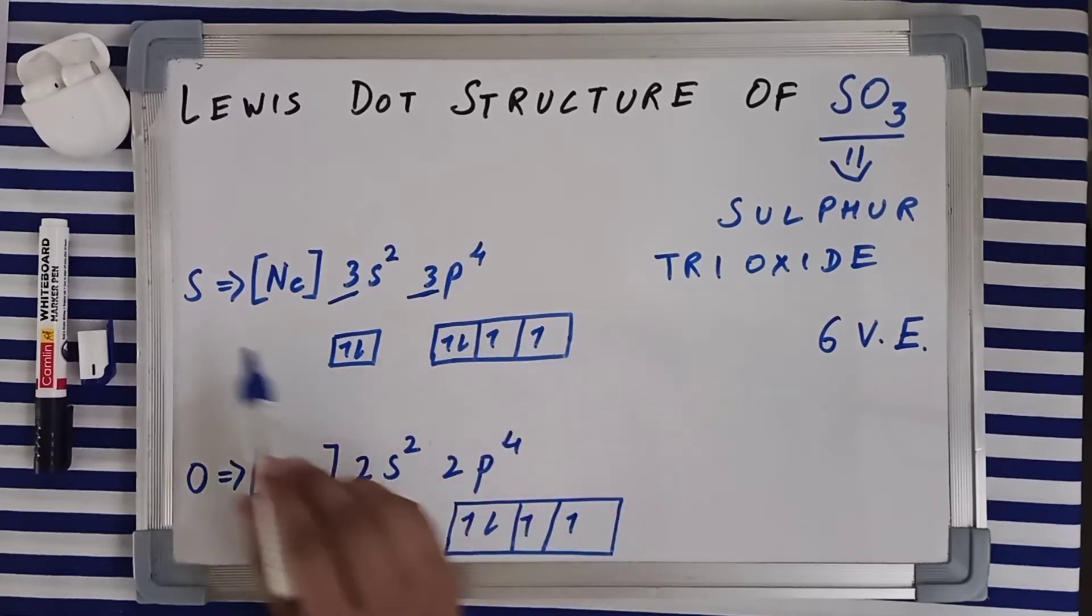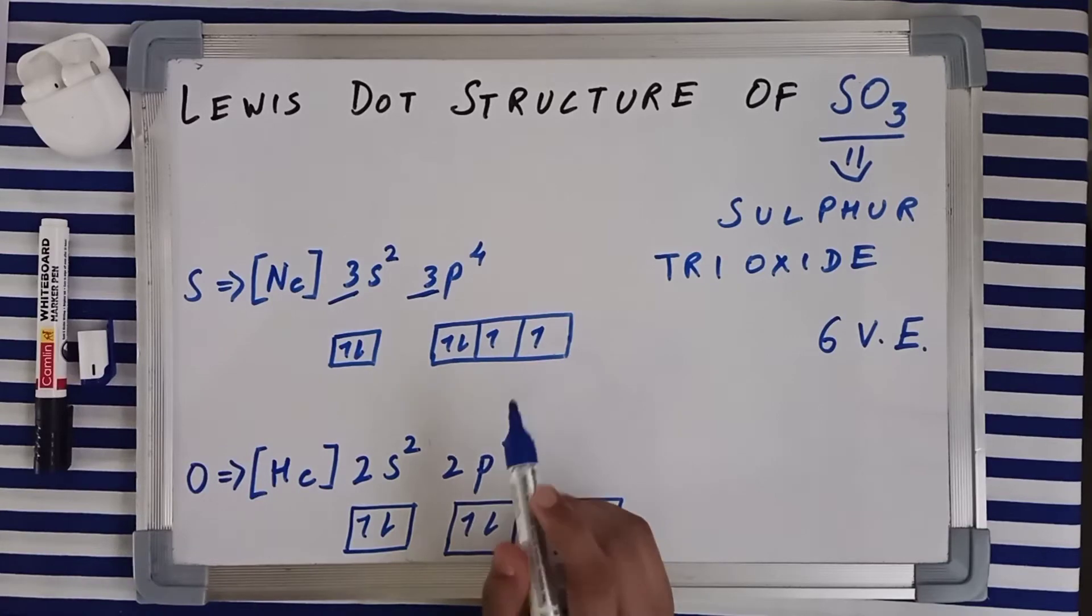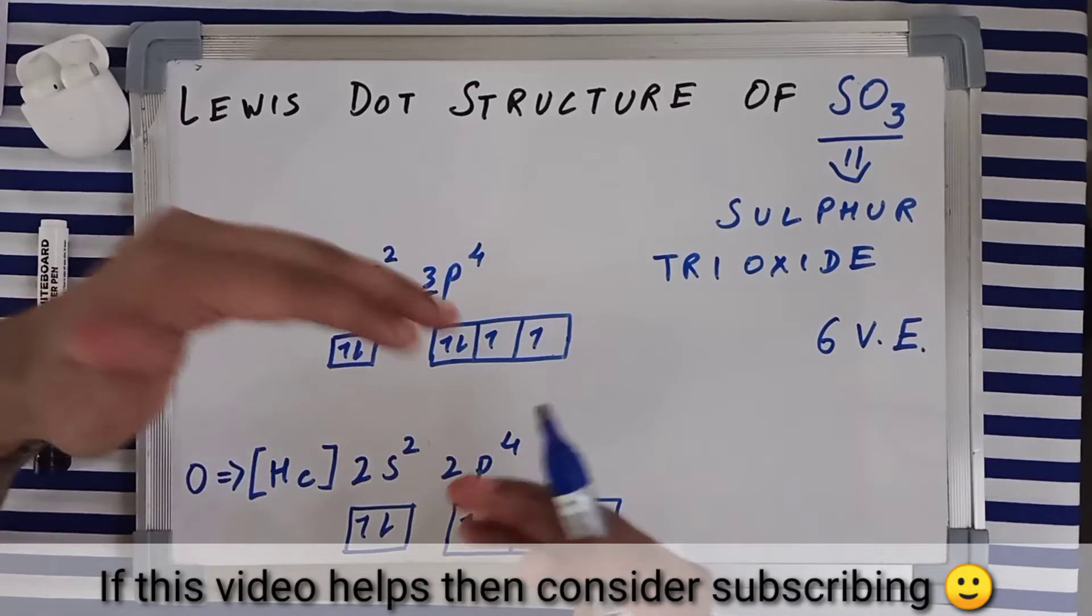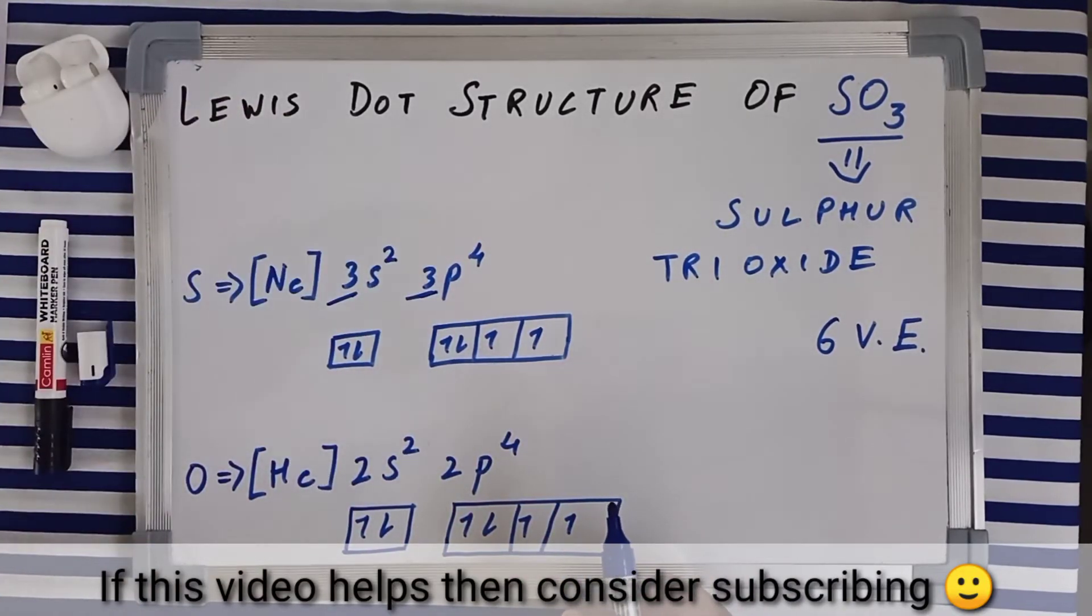Now, as you can see, there are two unpaired electrons presently in its ground state. In the ground state of sulfur, there are two unpaired electrons, which means sulfur presently can make just two bonds. But let's proceed a little further and analyze the electronic configuration.